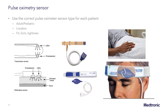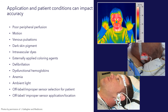There are a number of sensor application and patient conditions that can impact accuracy of the pulse oximeter. Two of the most common are poor peripheral perfusion as well as motion. While modern pulse oximeters have algorithms to mitigate these issues within reason, poor peripheral perfusion can result in a decrease in the pulse plethysmography waveform and the ability to properly detect oxygen saturation.